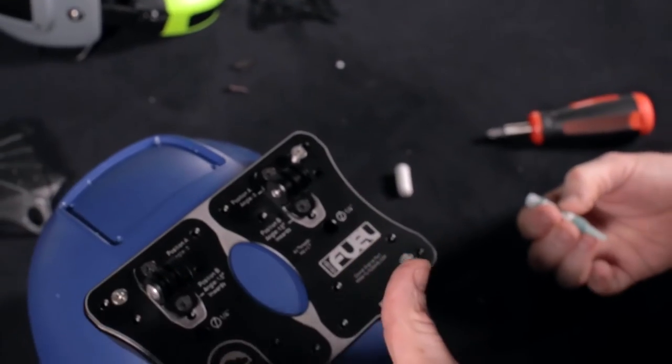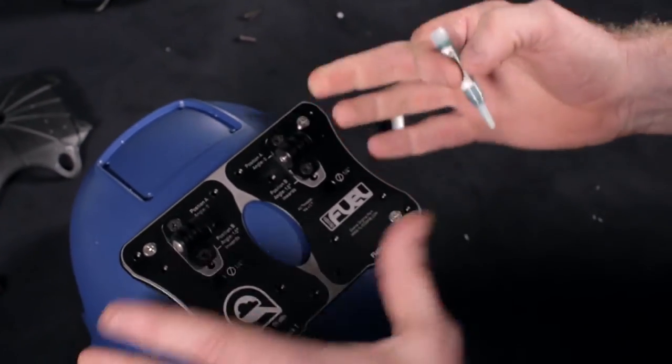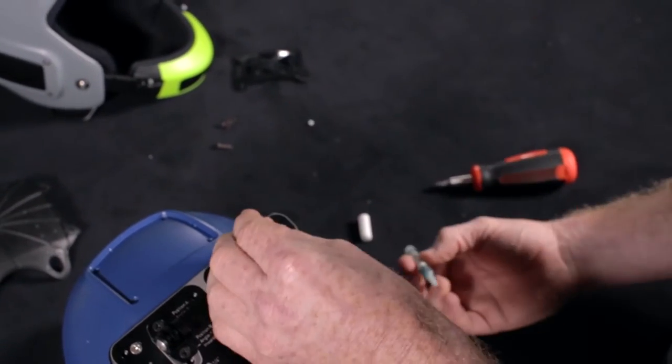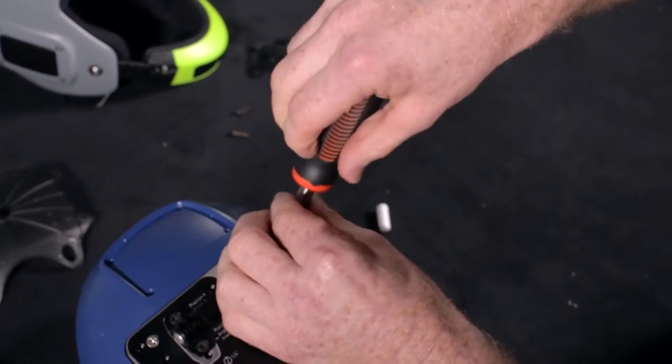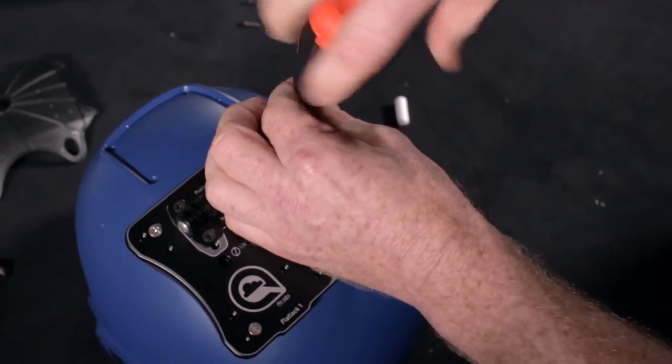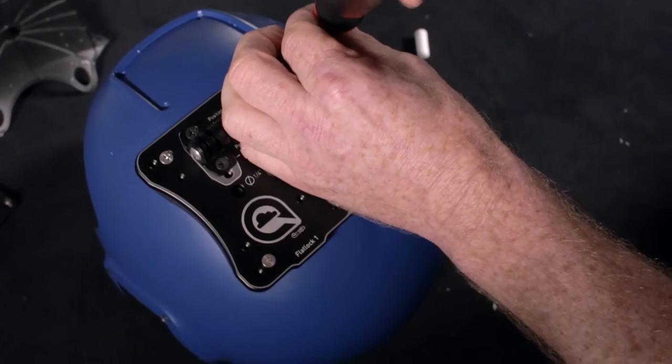So once you've got all four screws in this mount, and the mount's on the helmet and loosely done up, you can pull one screw out at a time to get some thread locker on there. And when you're doing these screws up, there's no need to swing on them, just get them done up firmly, and the Loctite will stop the screw from coming out.